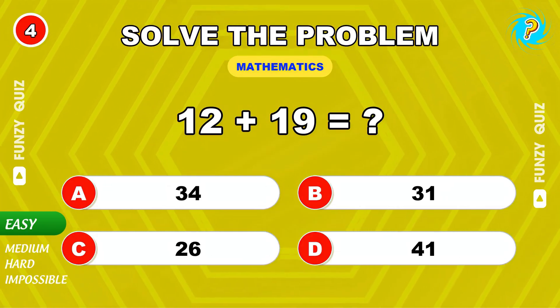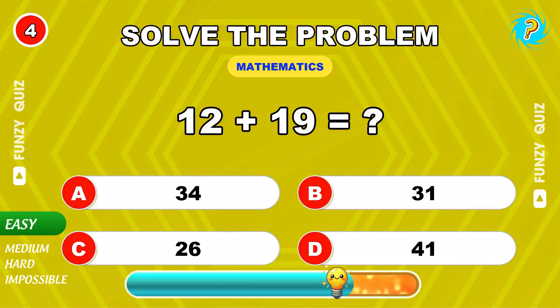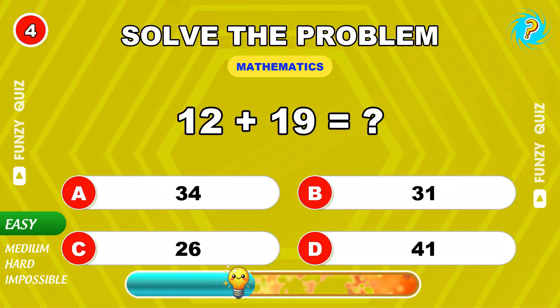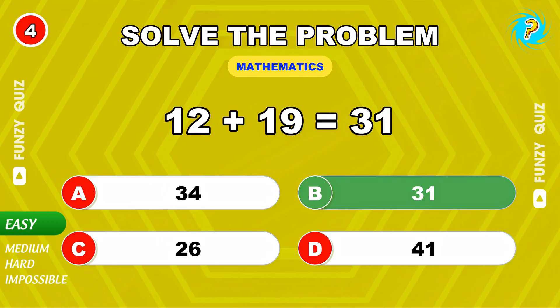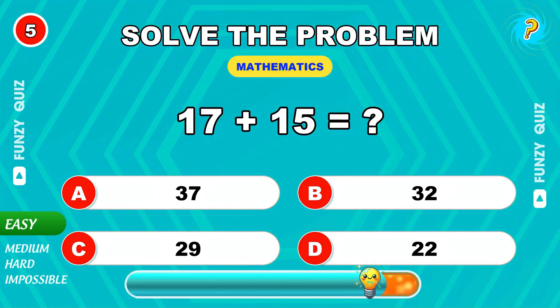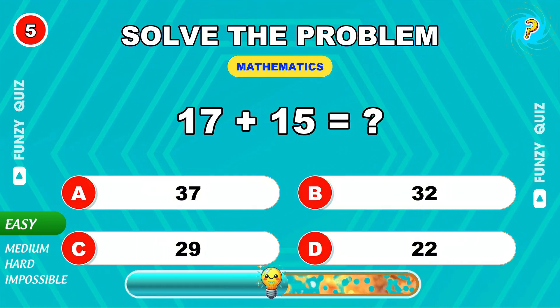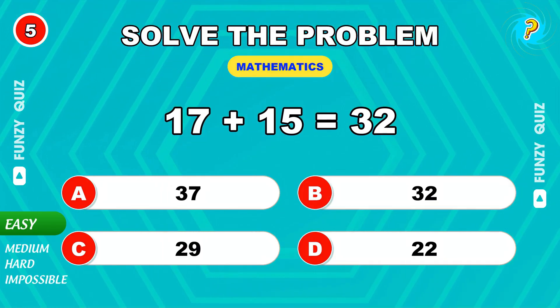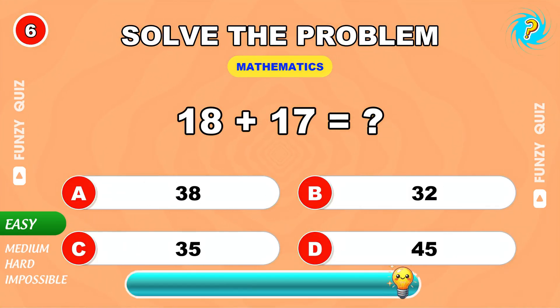12 plus 19. 31, excellent. What's 17 plus 15? 32. 18 plus 17. 35.